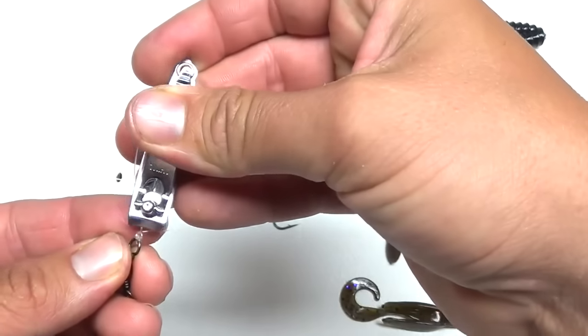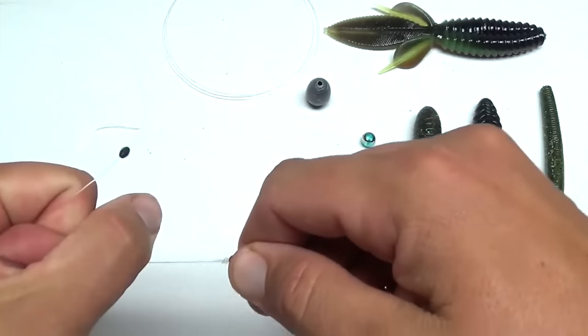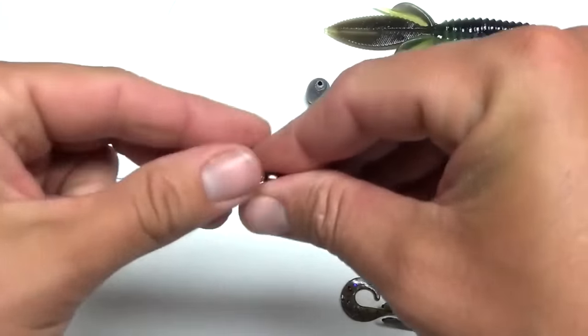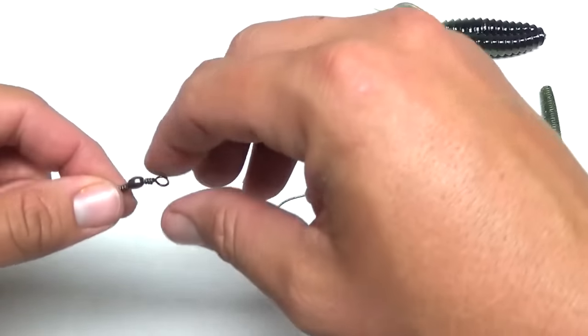There's kind of a lot to this technique, but once you do it a time or two, it's pretty simple. Alright, so we got our 20 pound main line here. Next, we're going to make our leader line.